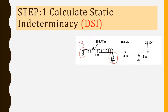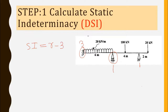For a fixed end there are three reactions, for a roller support there is one reaction, and for a hinge there are two reactions. However, in this figure, the horizontal reaction at the hinge will not count since the other end is fixed, so the hinge acts similarly to a roller with only one reaction. Static indeterminacy is calculated using r minus 3, where r is the number of reactions. So we have 3 plus 1 plus 1, which is 5, minus 3 equals 2.